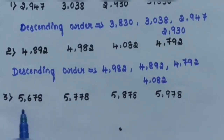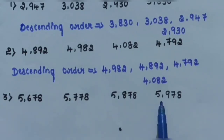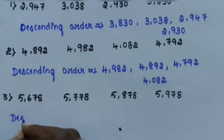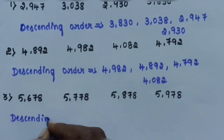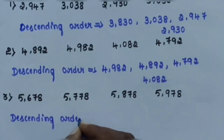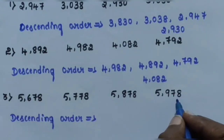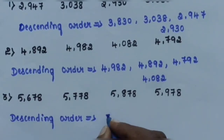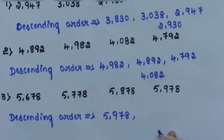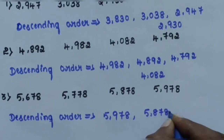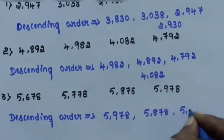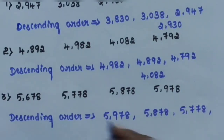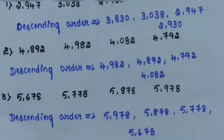Question number 3: arrange 5,678; 5,778; 5,878; and 5,978 in descending order. 5,978 is the greatest number. The descending order is: 5,978; 5,878; 5,778; and 5,678. Thank you.